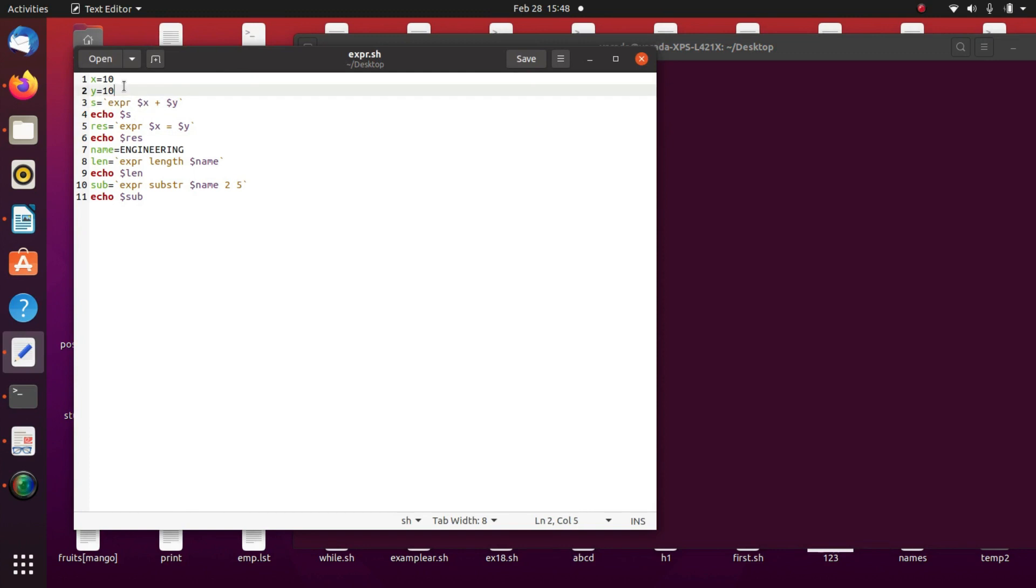So here I am taking x and y. You are going to find the sum by using expr command. And similarly we check if these two values are equal or not. If it is equal it returns 1 otherwise 0. And here by using the expr command we find length of a string and we find the substring in a string.